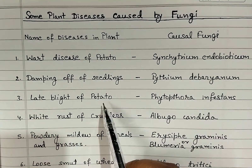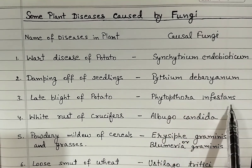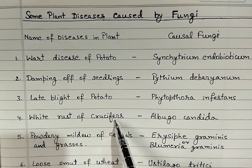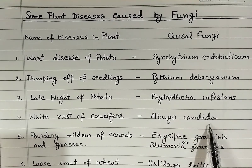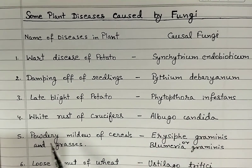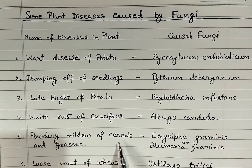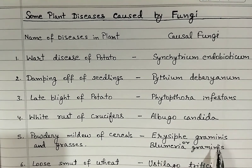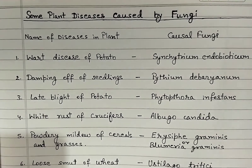Fourth, white rust of crucifers caused by Albugo candida. Fifth, powdery mildew of cereals and grasses caused by Erysiphe graminis or Blumeria graminis.